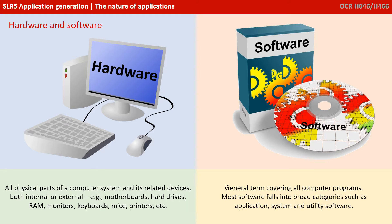Everything that makes up a computer system falls into one of two very broad categories: hardware and software. Hardware is all the physical parts of a computer system and its related devices, both internal or external. So we're talking things like motherboards, hard drives and RAM, as well as things like monitors, keyboards, mice and printers.